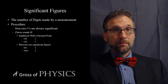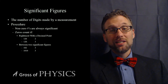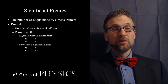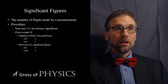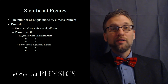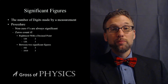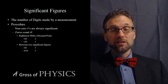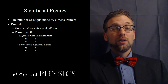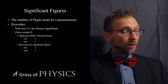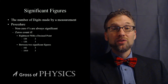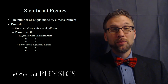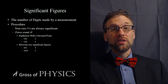When there's a decimal point, any zero on the right matters — any zero to the right of the significant digits counts. Also, if a zero is sandwiched between two significant digits, it also counts. For example, if we have the number 120 with no decimal point, the rightmost zero is not significant; it's just a placeholder. So that would have two significant figures.